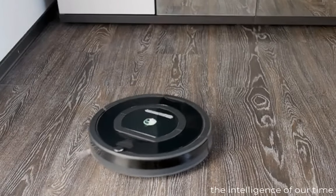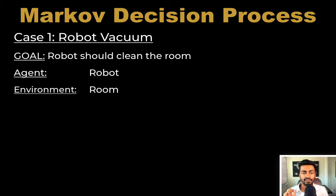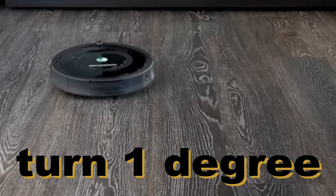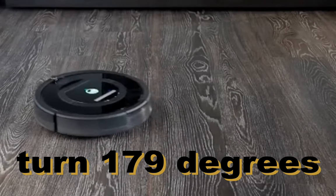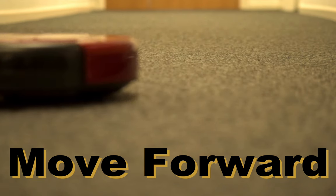Let's say in this first case we want to create a robot that can clean the room. The agent is the Roomba itself, and the environment is the room. The actions the Roomba can perform include turning one degree, two degrees, and so on up to 179 degrees, as well as in the opposite direction turning negative one degree down to negative 179 degrees, and another action could be to simply move forward.